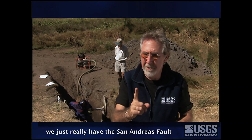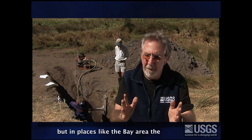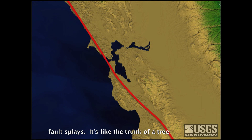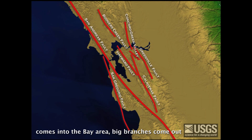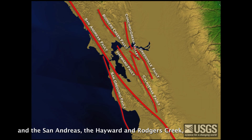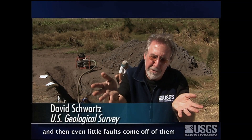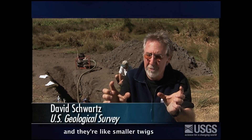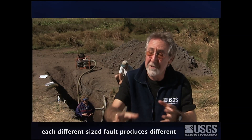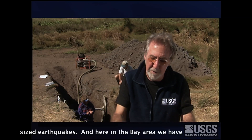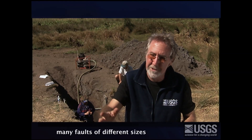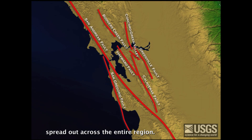In parts of California, we just have the San Andreas Fault — it's the major feature. But in places like the Bay Area, the fault splays. It's like the trunk of a tree coming into the Bay Area, with big branches coming out. These are major faults like the San Gregorio, the San Andreas, the Hayward, Rogers Creek, the Calaveras, and the Concord Green Valley. They accommodate most of the movement. Even little faults come off of them like smaller twigs. Each different size fault produces different size earthquakes, and here in the Bay Area we have many faults of different sizes spread out across the entire region.